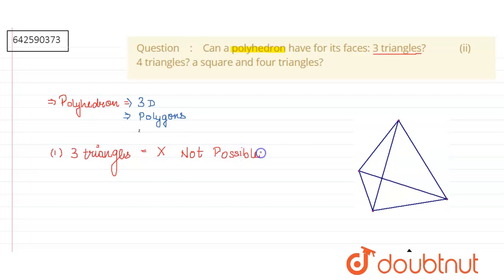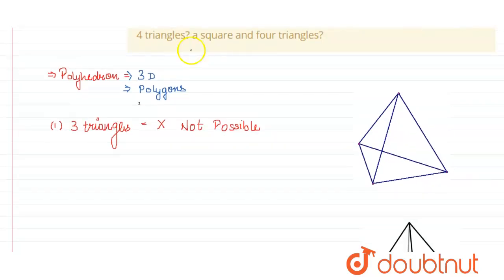We require at least four triangles to make a polyhedron. Let's move to the next part, which is four triangles. So I just said that at least four triangles are needed